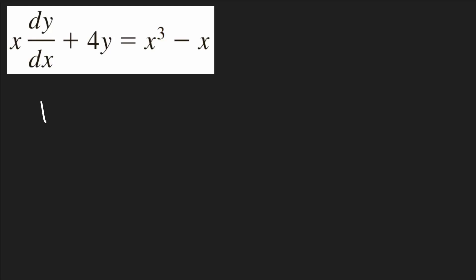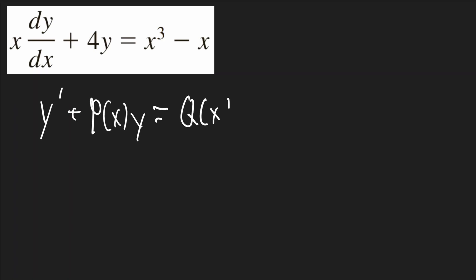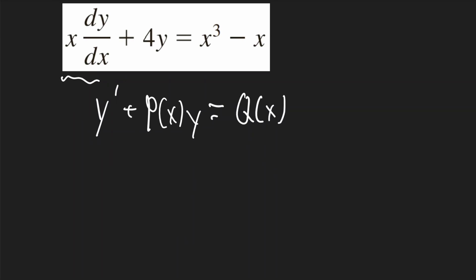In this problem, I'll start by getting the equation in the right form. The right form is y prime plus p of x times y equals q of x. In this problem, y prime is not by itself — it's with x. So I should divide all the terms by x.